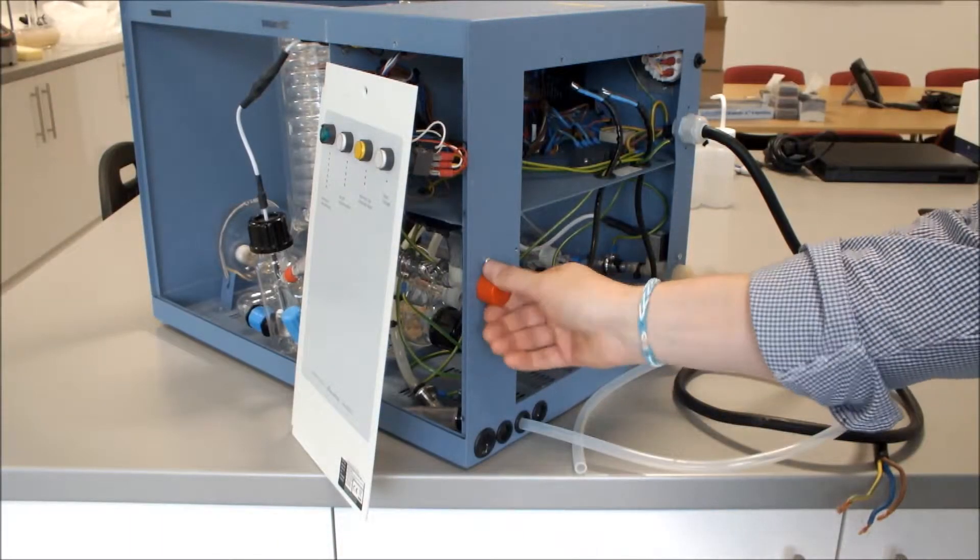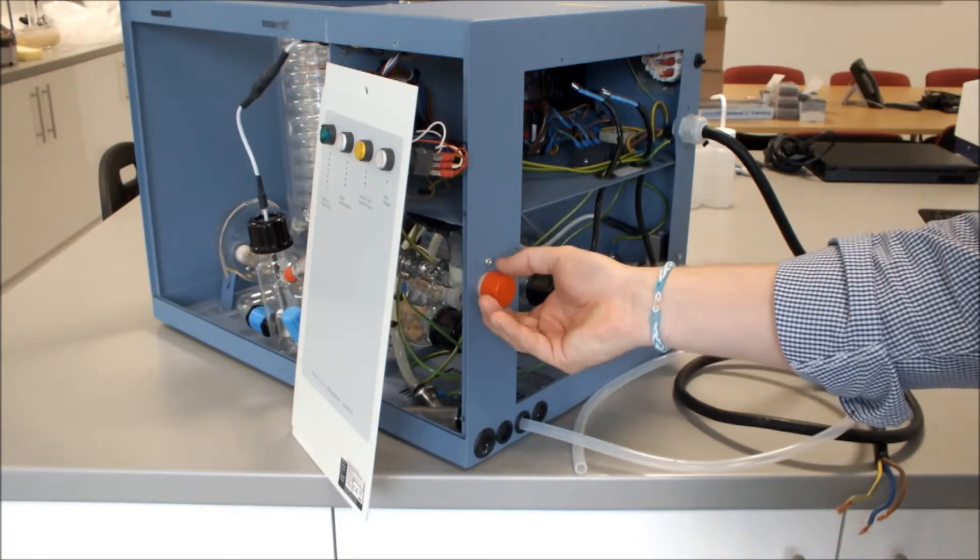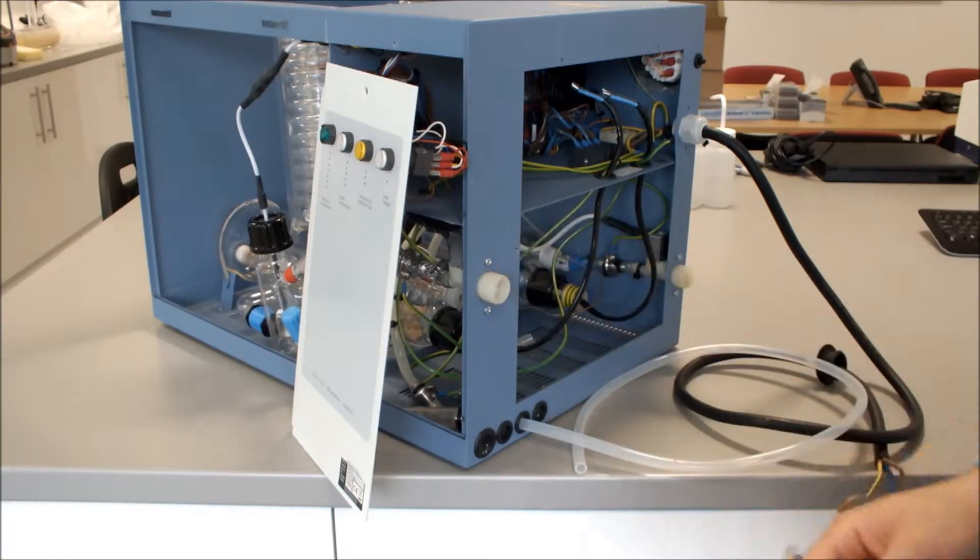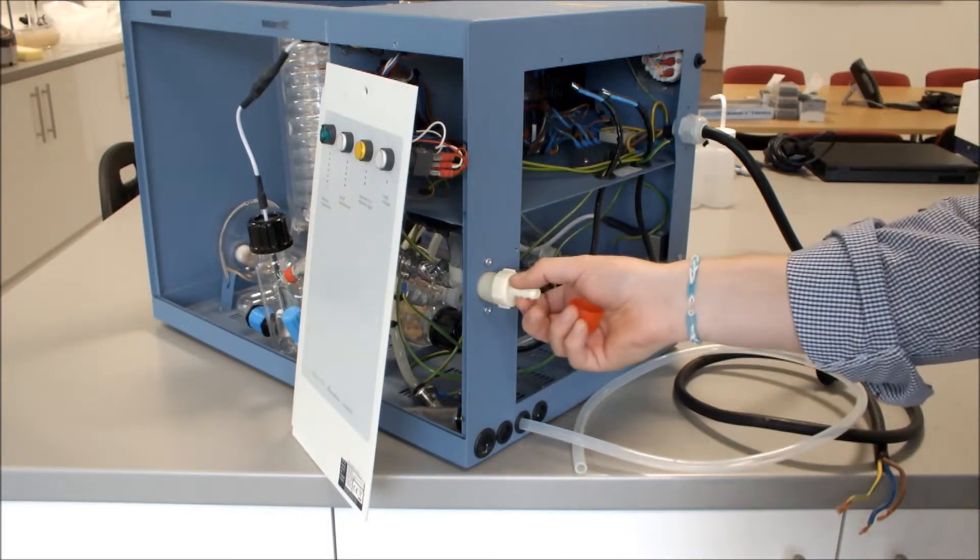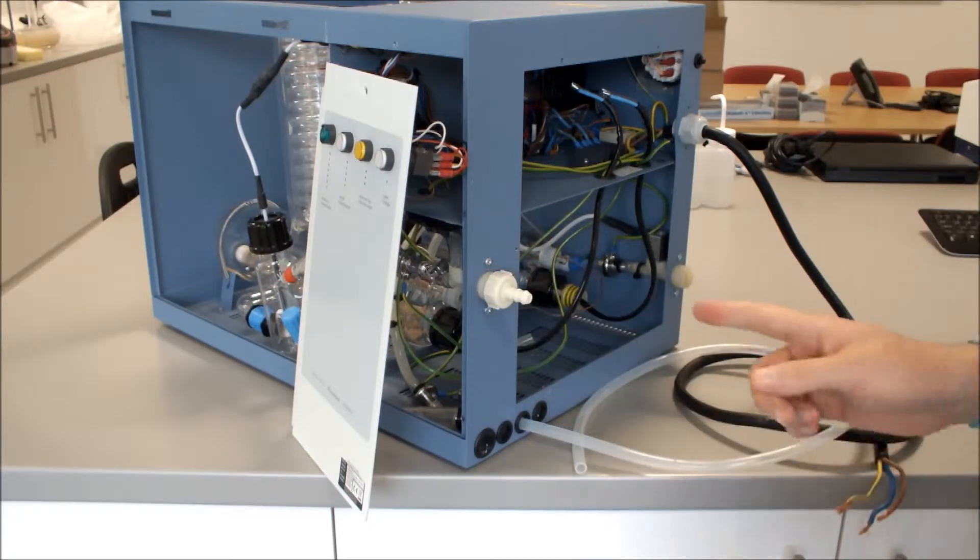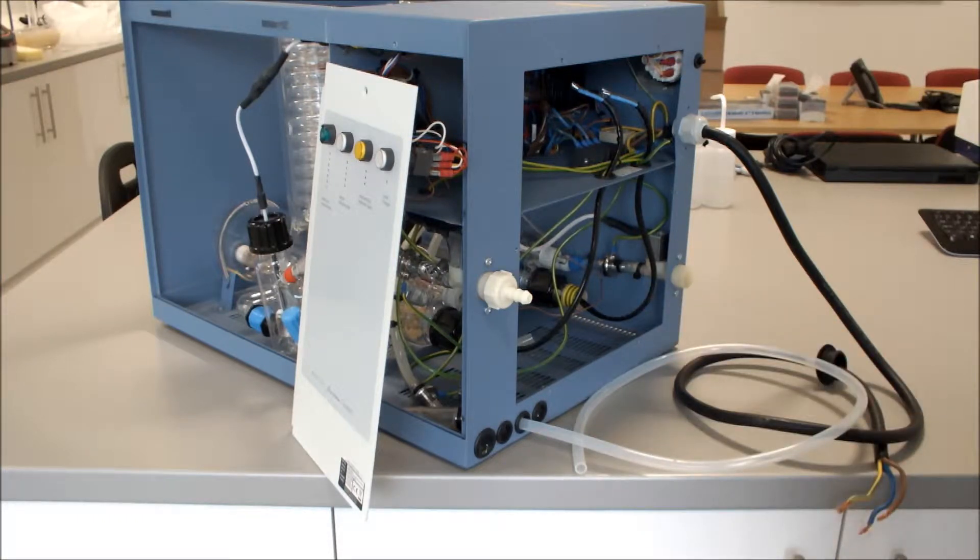We then remove the blanking cap from our deionised water or pre-treated water inlet. We then connect our deionised water. You can then connect your suitable tubing for your deionised or pre-treated water.